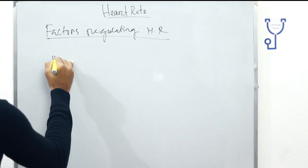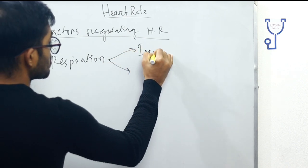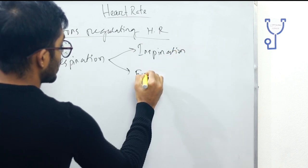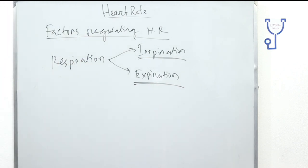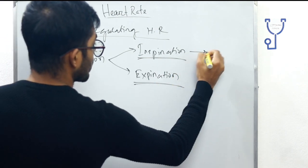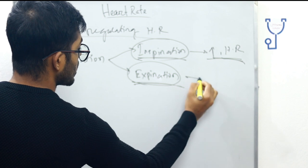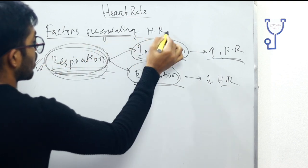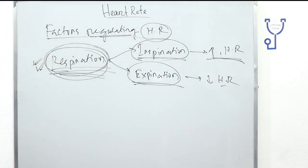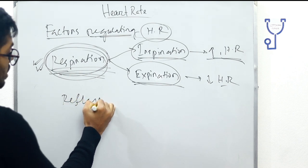Respiration causes changes in the regulation of heart rate. It is divided into two phases: inspiration and expiration. During inspiration, heart rate will be increased, and during expiration, heart rate is decreased. By this process, respiration regulates our heart rate.